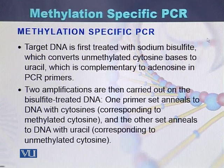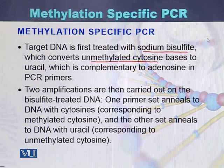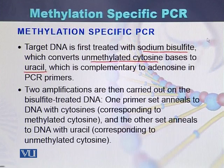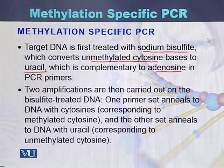The target DNA is first treated with sodium bisulfite, which converts the unmethylated cytosine bases into uracil. This is the principle of methylation specific PCR — unmethylated cytosine bases are converted to uracil, which is complementary to adenosine in the PCR primers. Two amplifications are then carried out on the bisulfite treated DNA.